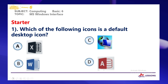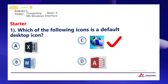I hope you have selected your answer. So let's look at the correct answer here. The answer is C. That icon represents My Network Places, which is a default icon. Let's move on to the next one.